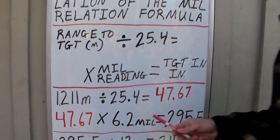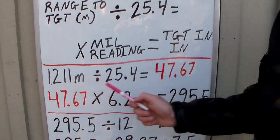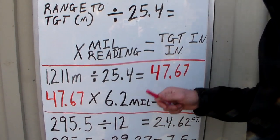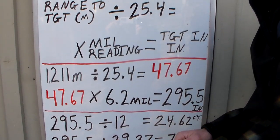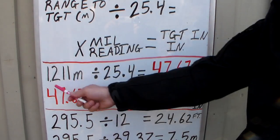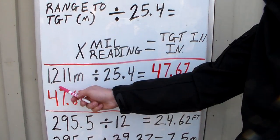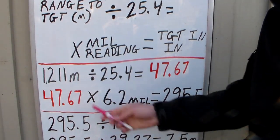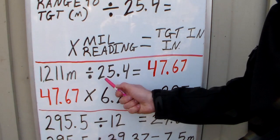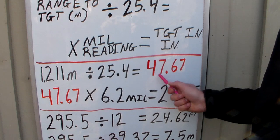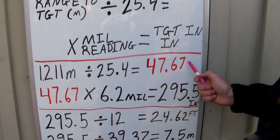Okay, so let's break it down. I got an example here. I'm going to keep it real simple. I'm looking at just one building and I want to know how wide that one building is. I use my laser range finder or any other methods and I know that building is 1,211 meters from me. So we're going to divide that by 25.4, which never changes, equals 47.67.